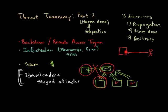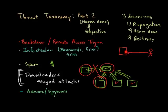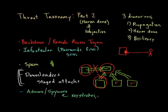The last two categories are what we call adware and spyware, and these are somewhat subjective categories. Adware is software that basically displays ads on your system — while you're browsing, an ad pops up prompting you to buy products. Spyware is software that can record your activity — for example, recording keystrokes or screenshots. We often talk about keystroke loggers and screen scrapers.